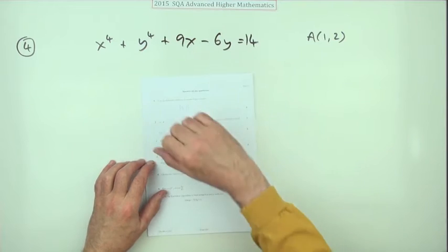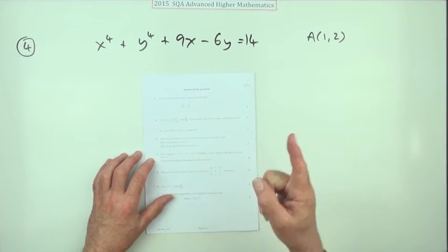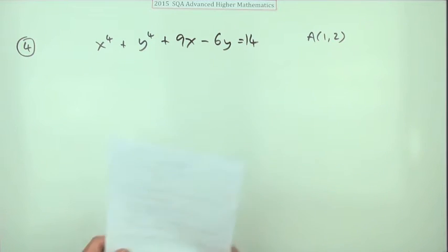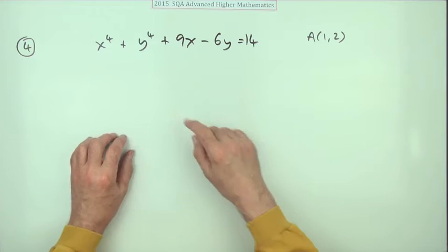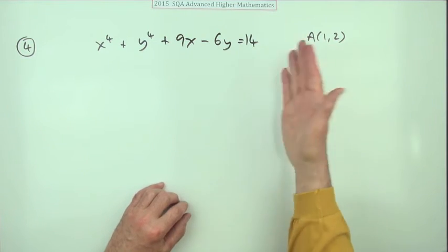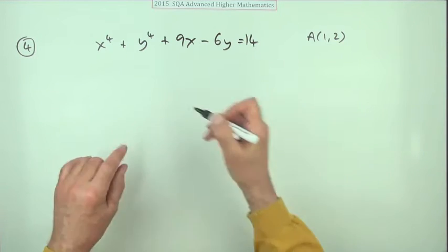So number four then from the 2015 Advanced Higher Maths. There we are, equation of a tangent to a curve, a curve given implicitly. Four marks. Well, just like in the Higher, differentiate it to get an expression for the gradients, then put the figures in to find the gradient and use your y minus b.